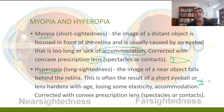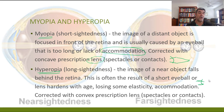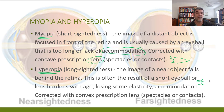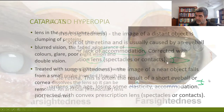Both myopia and hyperopia can be corrected with either spectacles or contact lenses, and sometimes they can also be corrected by surgery. We'll look at each of those in more detail later in this video.